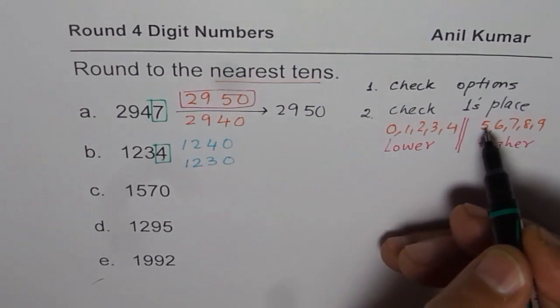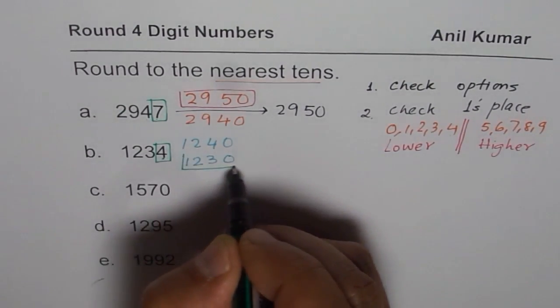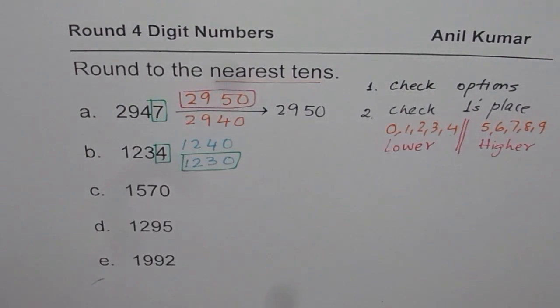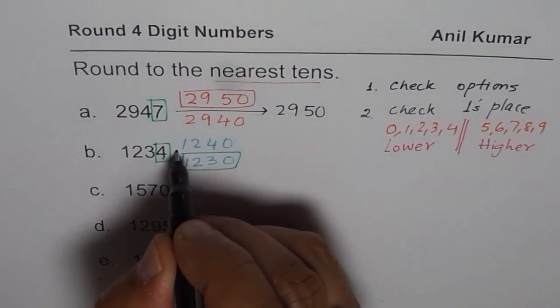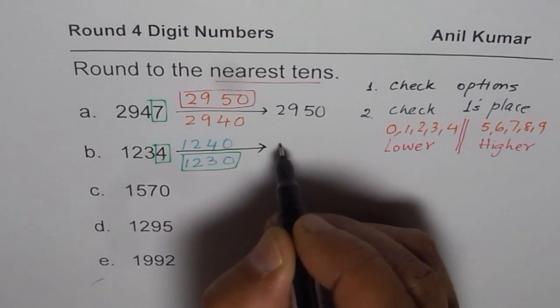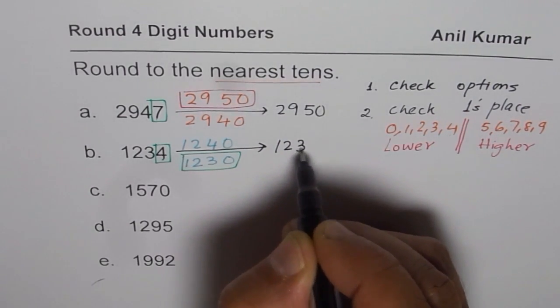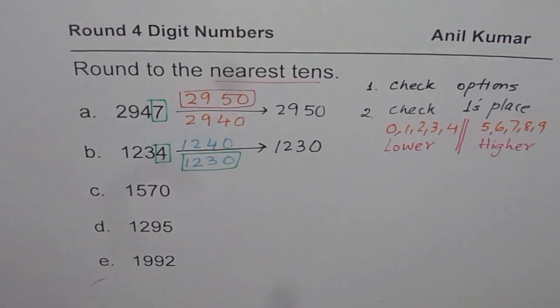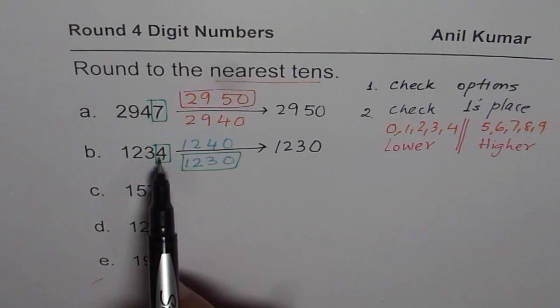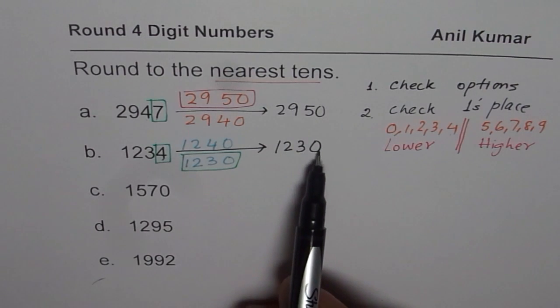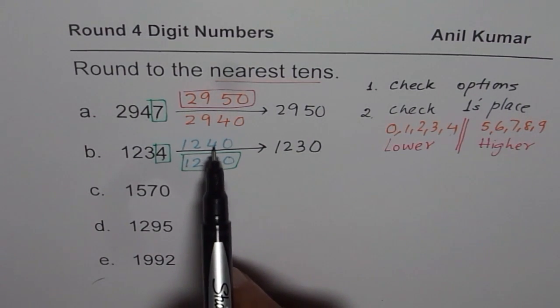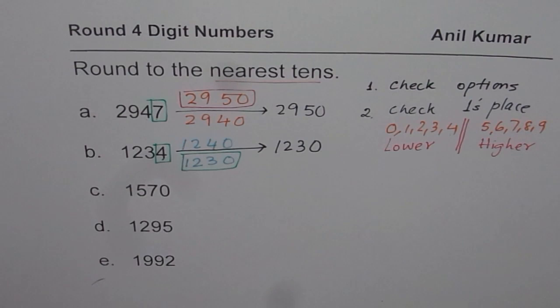4 is lower than 5. So we will select the lower option. So our lower option is 1230. So we will write down that as our answer. 1,230. So 1,234 is closer to 1,230 than 1,240. That is why it rounds to 1,230.